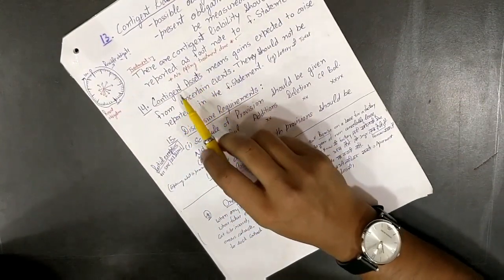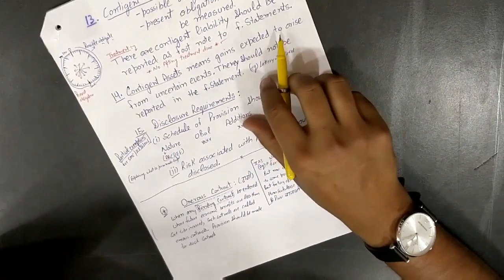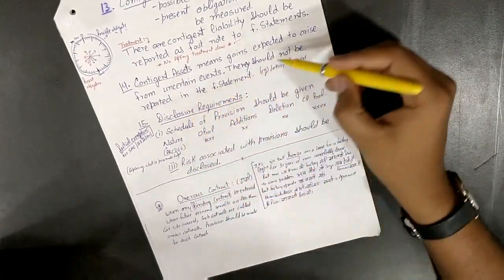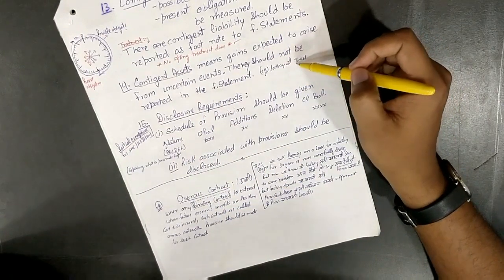Contingent assets: no treatment for contingent asset. Gains expected to arise from uncertain events should not be reported in financial statement, for example lottery ticket.